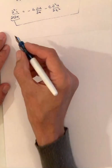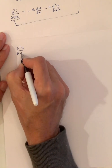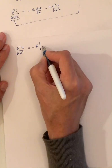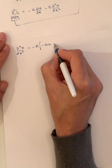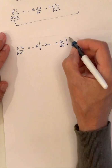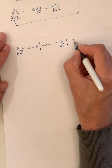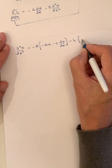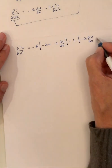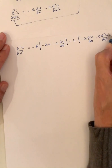Plugging everything in, we get D²U/DX² equals minus R times the quantity (minus G·U minus C·DU/Dt), minus L times the quantity (minus G·DU/Dt minus C·D²U/Dt²).